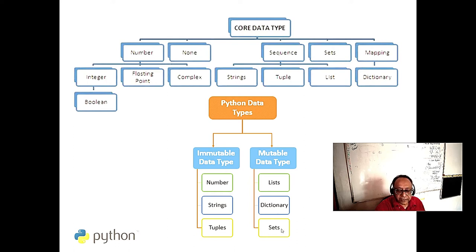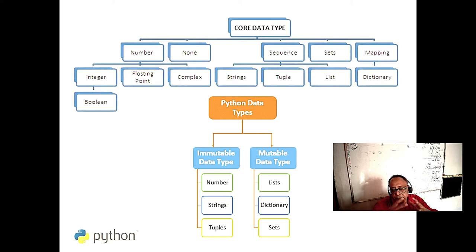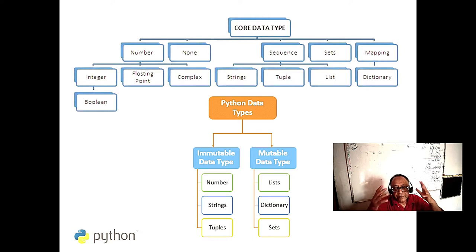Dictionaries and sets come next. Frozen sets are immutable. These are very flexible data structures. With data in intelligent structures, your program becomes much simpler, data behaves better, and programs can be shorter.